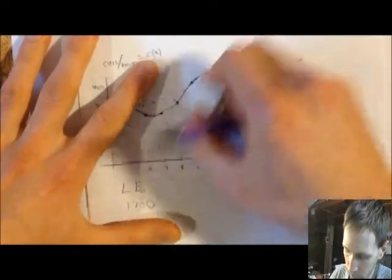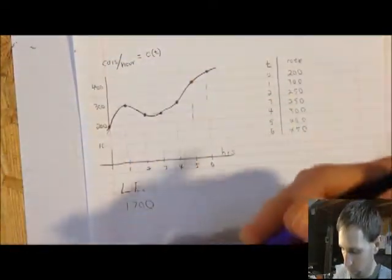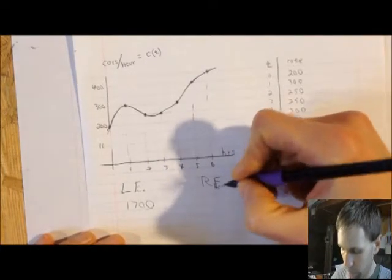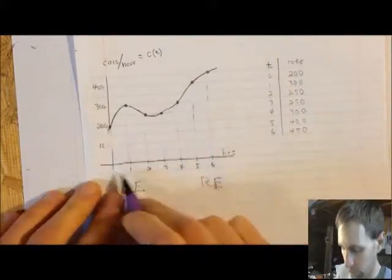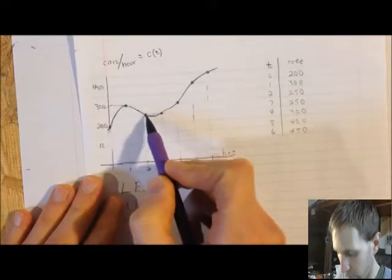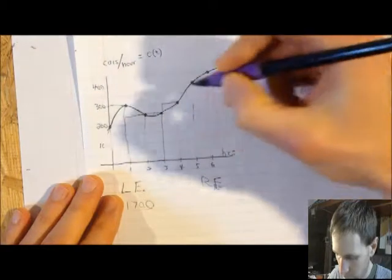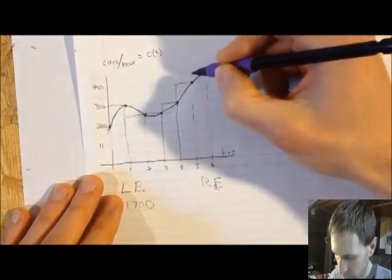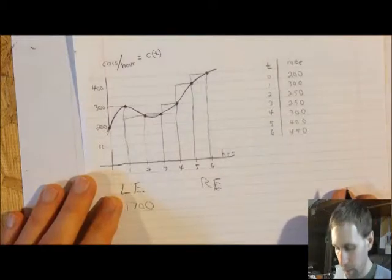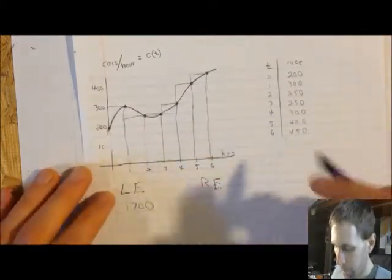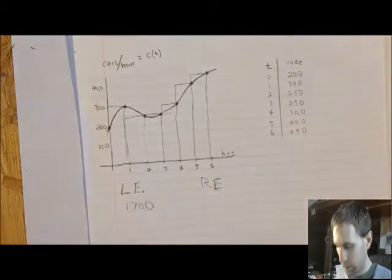The two other ones we typically use are right endpoint and midpoint. For a right endpoint sum, I use the right endpoints of all these little subintervals rather than the left. It appears that we have an overestimate of what it's going to be, but we're not going for accuracy — just add these up and see what we get. That turns out to be 1,950. You know that if this were something we actually had to compute, the actual answer is going to be between these two numbers.